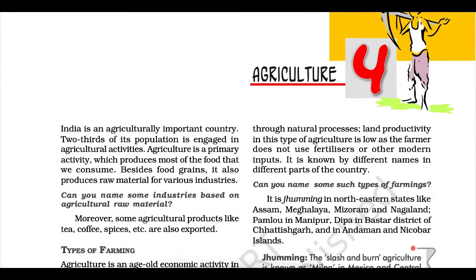The slash and burn agriculture is known as Milpa in Mexico and Central America, Conuco in Venezuela, Roca in Brazil, Masole in Central Africa, Ladang in Indonesia, and Ray in Vietnam. In India, this primitive form of cultivation is called Bewar or Dahiya in Madhya Pradesh, Podu or Panda in Andhra Pradesh, Pama Dabi or Koman or Bringa in Odisha, Kumari in Western Ghats, Valre or Watre in southeastern Rajasthan, Khil in the Himalayan Belt, Kuruva in Jharkhand, and Jhuming in the northeastern region.